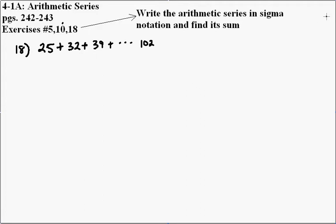In problem number 18, we are given the series 25 plus 32 plus 39 plus dot dot dot 102. We are asked to write the arithmetic series in sigma notation and find its sum.